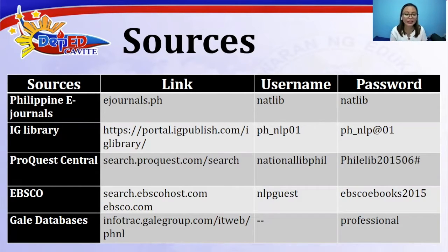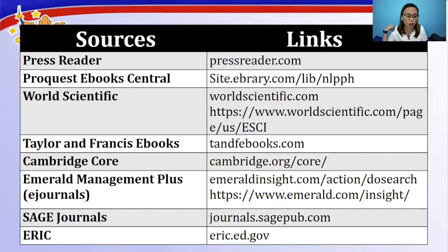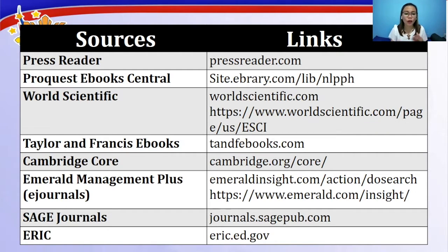Additional sources include the Press Reader, ProQuest, ProQuest e-Book Central, World Scientific, Taylor and Francis e-Books, Cambridge Core, Emerald Management Plus e-journals, Sage Journals, and ERIC. These are just some of the sources where we can search for literature for a future study.